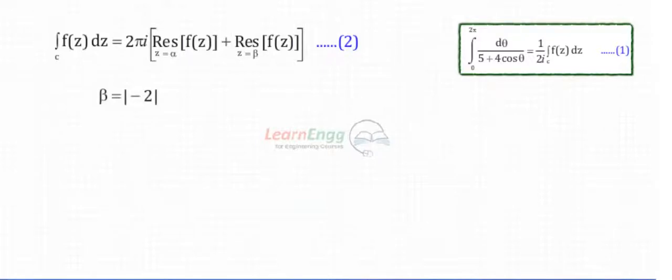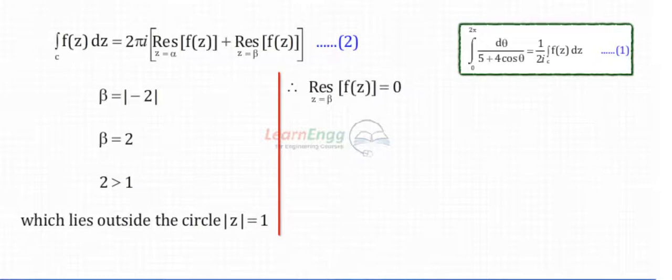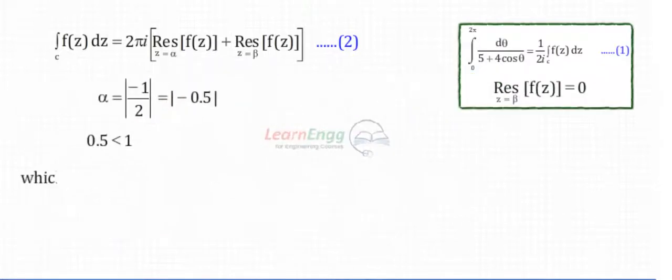Now β = −2, which lies outside the circle |z| = 1. Therefore the residue at z = β is zero. Now α = −1/2; since 0.5 < 1, α lies inside the circle |z| = 1.